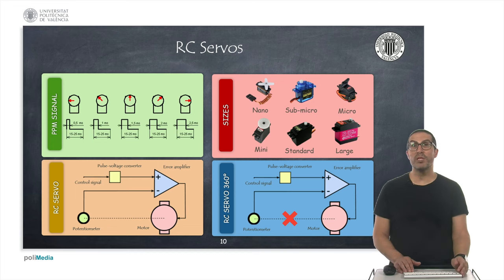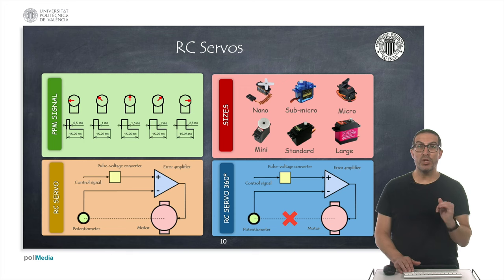On the other hand we have continuous rotation servos, also known as 360 degree servos, and they use exactly the same signal as standard RC servos, but their feedback, or the feedback of the potentiometer, is not implemented. Any deviation from the reference position of 90 degrees is usually used to drive a current to the motor that will generate the speed that we need in open loop.